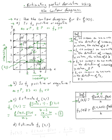Now to estimate f_y of (2, 1), I need to go from (2, 1) to the next point along the y-axis. That point is (2, 2). So f_y of (2, 1) equals f of (2, 2) minus f of (2, 1) over 2 minus 1. f of (2, 2) is the z value, which is 6. So it's 6 minus 10 over 1, which equals negative 4. And that's it for this example.